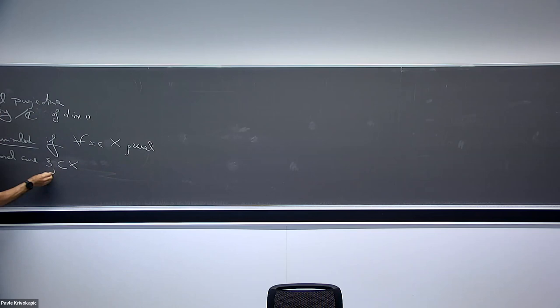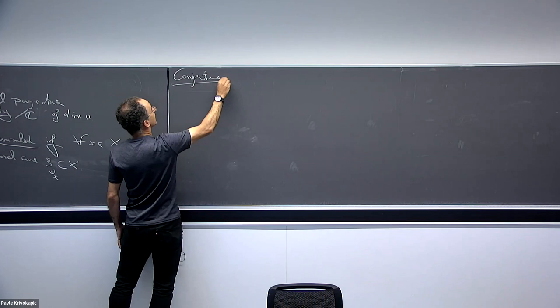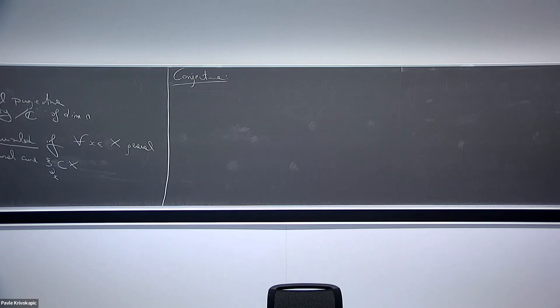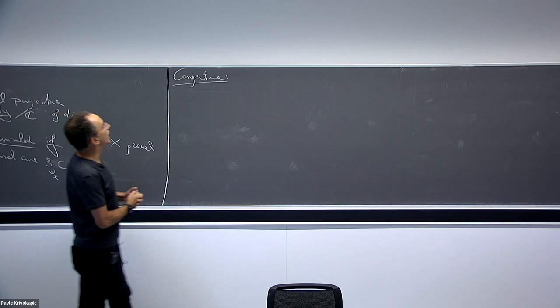The MMP for varieties is an attempt to generalize the classification of algebraic surfaces from the beginning of last century. It is due to Mori and basically says that there are two kinds of varieties: those that are uniruled and those that are not uniruled.